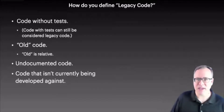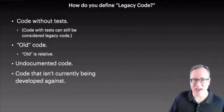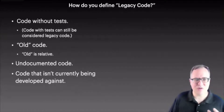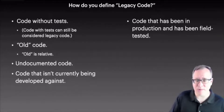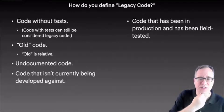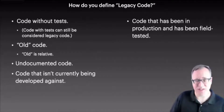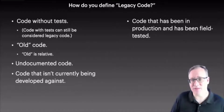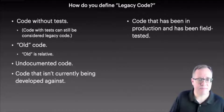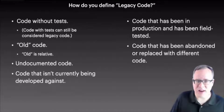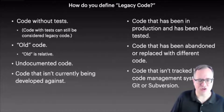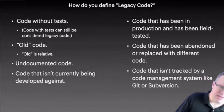Other definitions included undocumented code, code that isn't currently being developed against — an application that was built, is just running, and hasn't broken so nobody's bothered to fix it. There's also code that's a prerequisite — code that has been in production and field tested. If you've written code that's never seen production, it's not really legacy code. And finally, code that isn't tracked by a code management system like Git or Subversion.